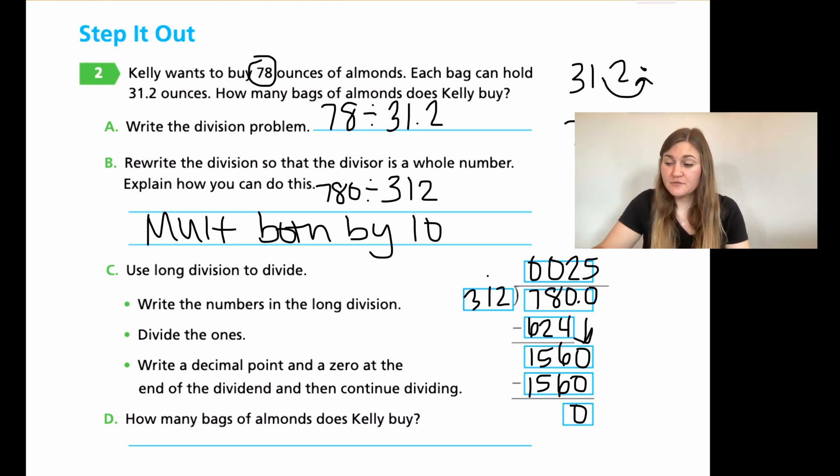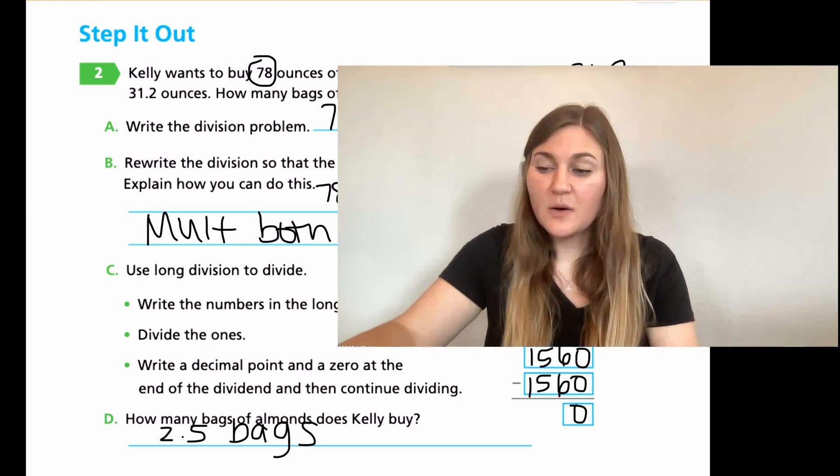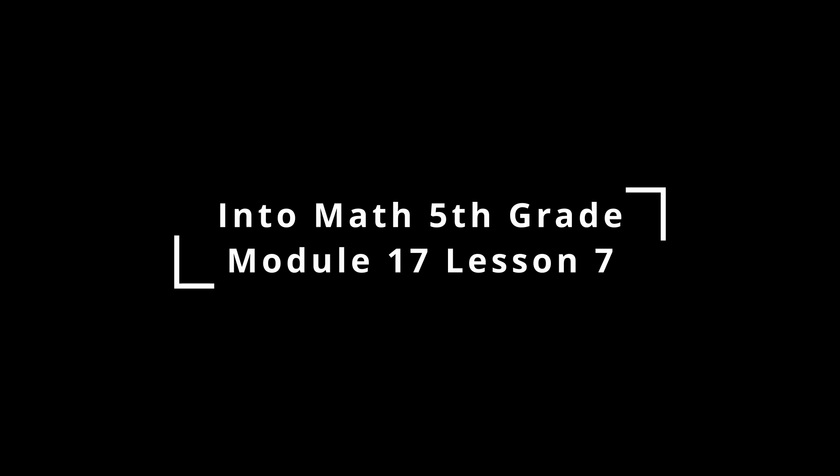Before we're done, we have to realize that our answer is not 25. What we need to do is we need to write the decimal point up. So we're going to take it from here straight up between the two and the five. So our answer is actually going to be 2.5. So how many bags of almonds does Kelly buy? Kelly buys 2.5 bags. Great job. Go ahead and finish up the rest of your problems in this lesson. And I'll see you back for module 18. Thank you.